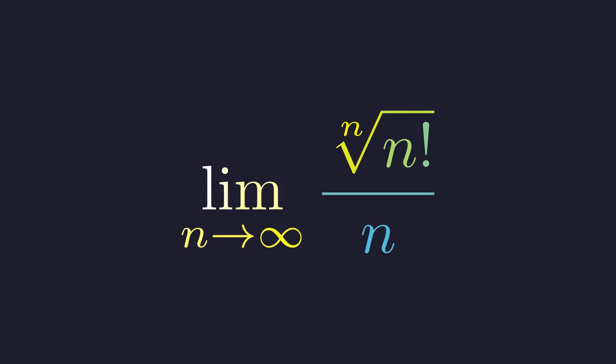Welcome back to Mental Math. This limit looks incredibly intimidating. We've got a factorial, an nth root, and a division by n, all going to infinity. But its solution reveals a stunning connection between discrete sums and continuous integrals.